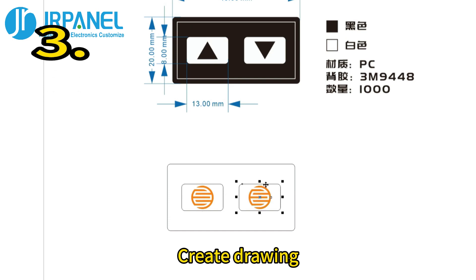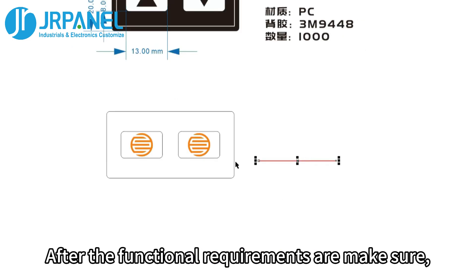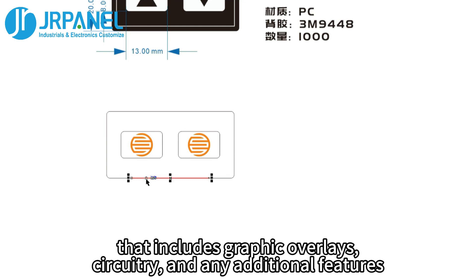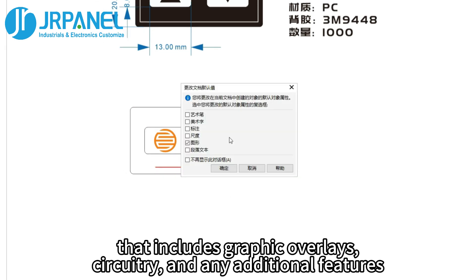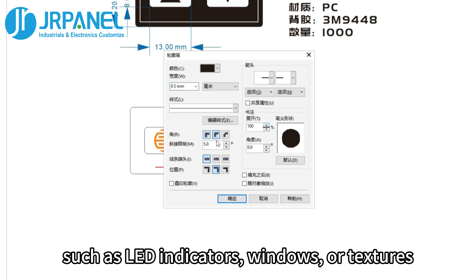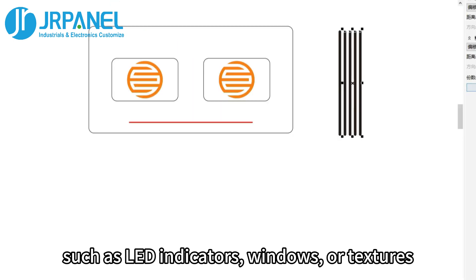Third, create a drawing. After the functional requirements are confirmed, create a detailed drawing that includes graphic overlays, circuitry, and any additional features such as LED indicators, windows, or texture.